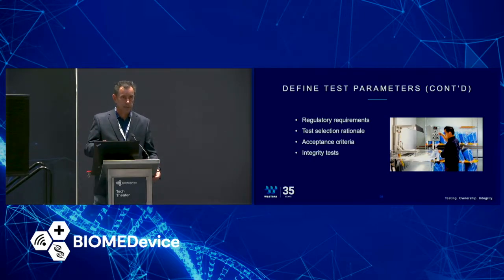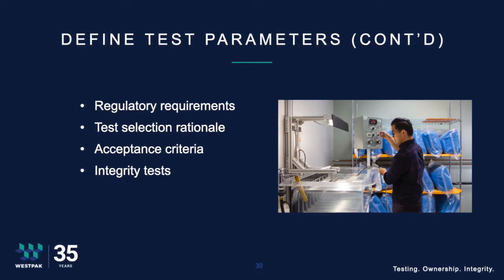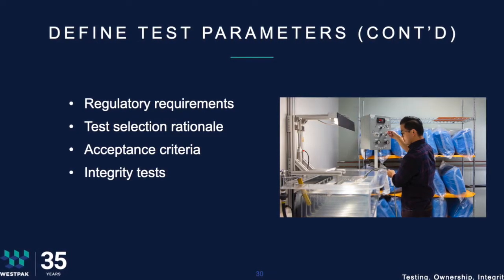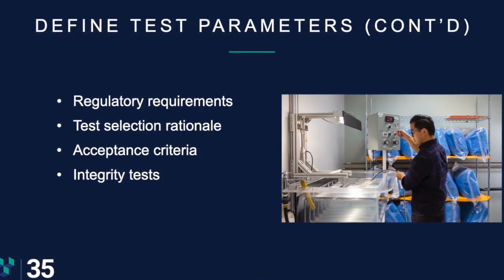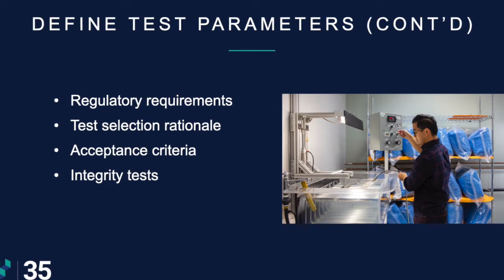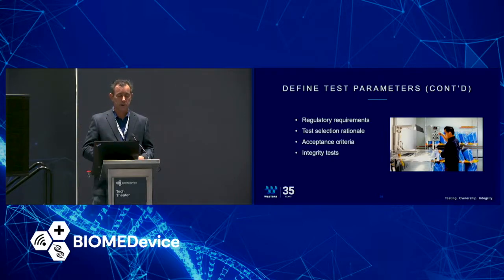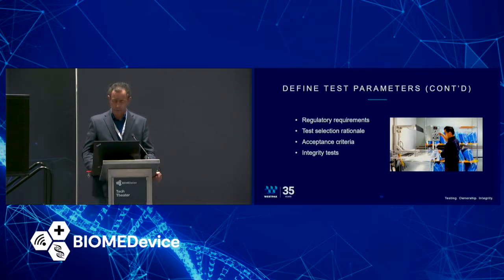For selection of test rationale, you need to create justifications for why you're using a particular temperature range and what your storage condition is. Acceptance criteria is something we're always asked about, and we help our clients determine it — but ultimately that is up to you. Then there are integrity tests: did the aging have an adverse effect on the package or the product? Our main concern is usually the packaging, because we do the bubble leak test and the peel test. Other tests for the product would be done at the client's site.